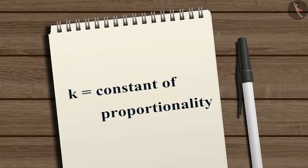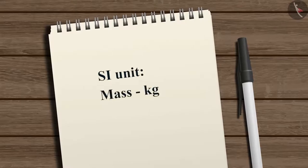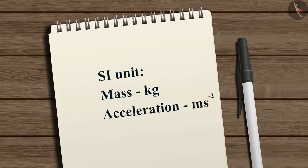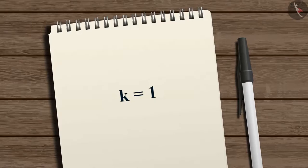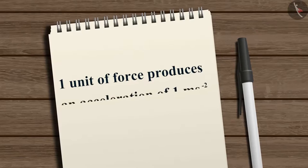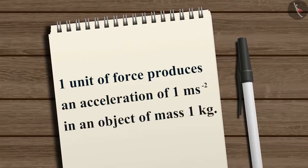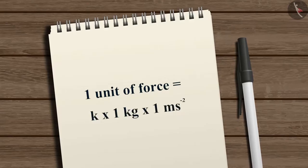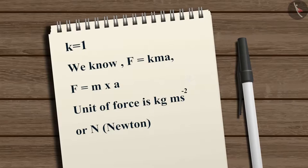The SI unit of mass is kilogram and acceleration is meter per second squared. The unit of force is chosen in such a way that the constant of proportionality K becomes 1. According to the formula, we can define one unit of force as the amount of force that produces an acceleration of 1 meter per second squared in an object of mass 1 kilogram. Thus the value of K becomes equal to 1, and we can write force as mass multiplied by acceleration. The unit of force is kilogram meter per second squared, or Newton, represented by the symbol N.